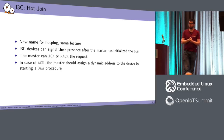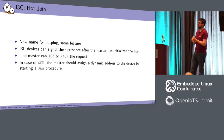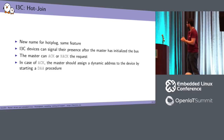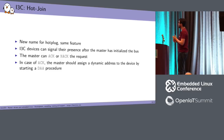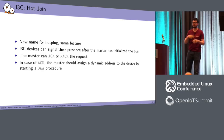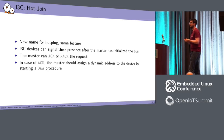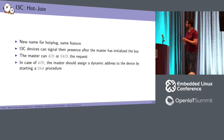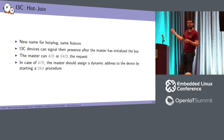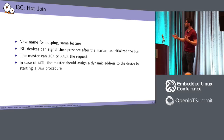Hotjoin is basically what we call hotplug for other protocols. It works similarly to IBI: when a device is connected on the bus without a dynamic address, it sends an interrupt requesting to join the bus. The master ACKs or NACKs the request. If ACKed, the master assigns a dynamic address via the ENTDAA procedure.